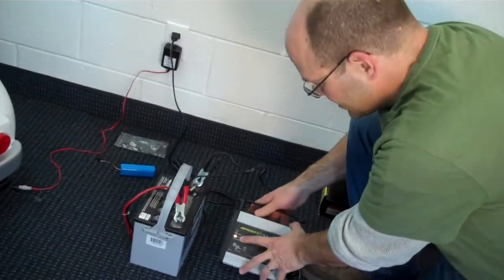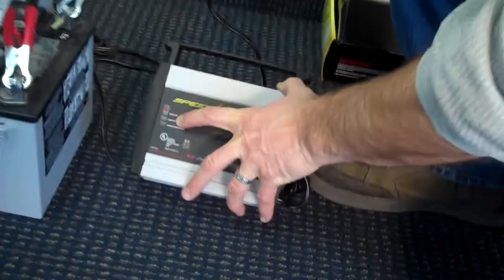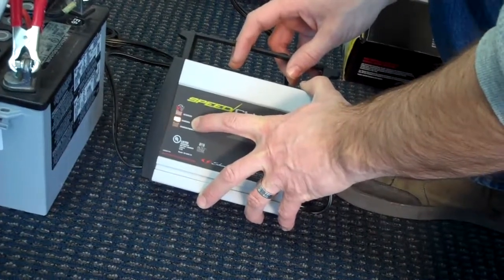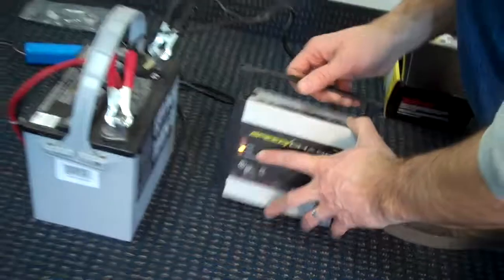And the charger, when it's charging, this light here is going to turn on yellow, saying that it's charging. When it's completely charged, it will turn green and that will let you know that this battery is done charging.